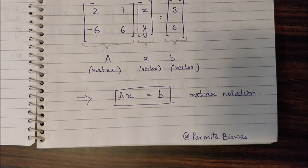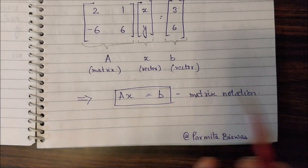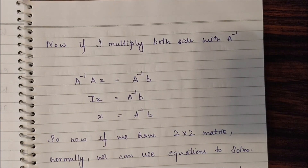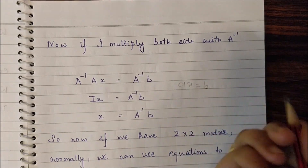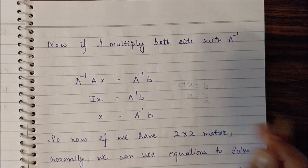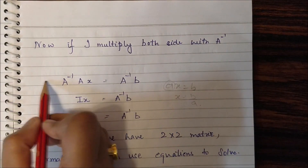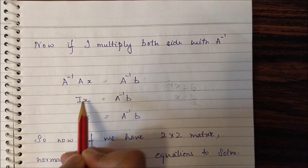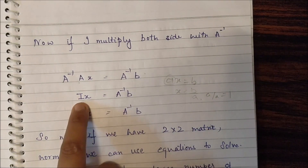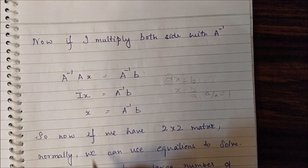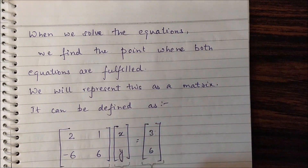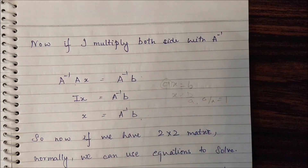When we have n equations and n variables, matrix notation makes calculation much easier. In matrix notation, we multiply both sides by A inverse: A inverse times Ax equals A inverse times b. Since A inverse times A is the identity matrix, this simplifies to x equals A inverse times b. So for any number of variables, there is a single equation and we can calculate all values.